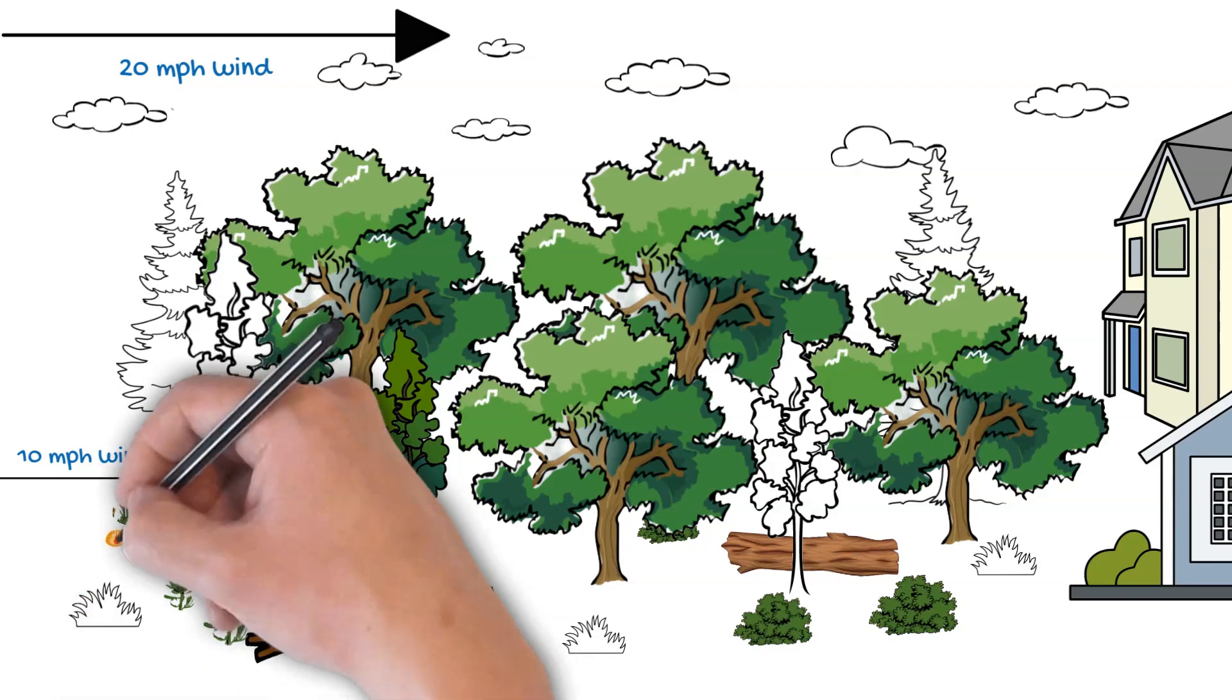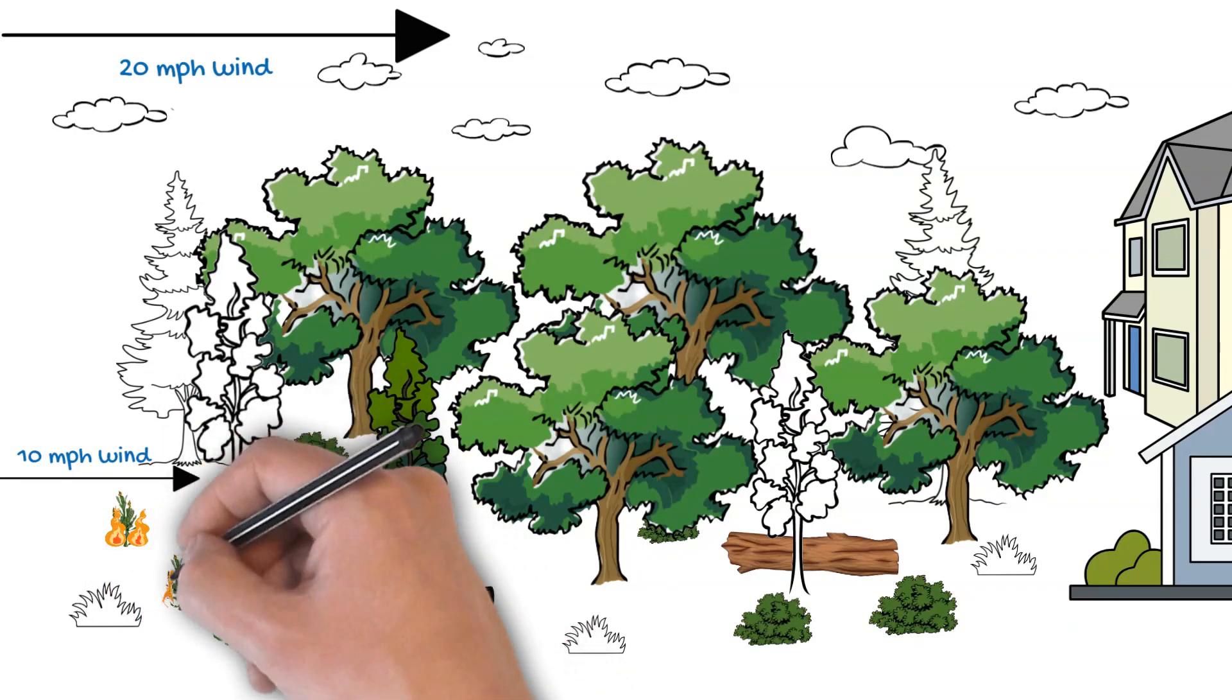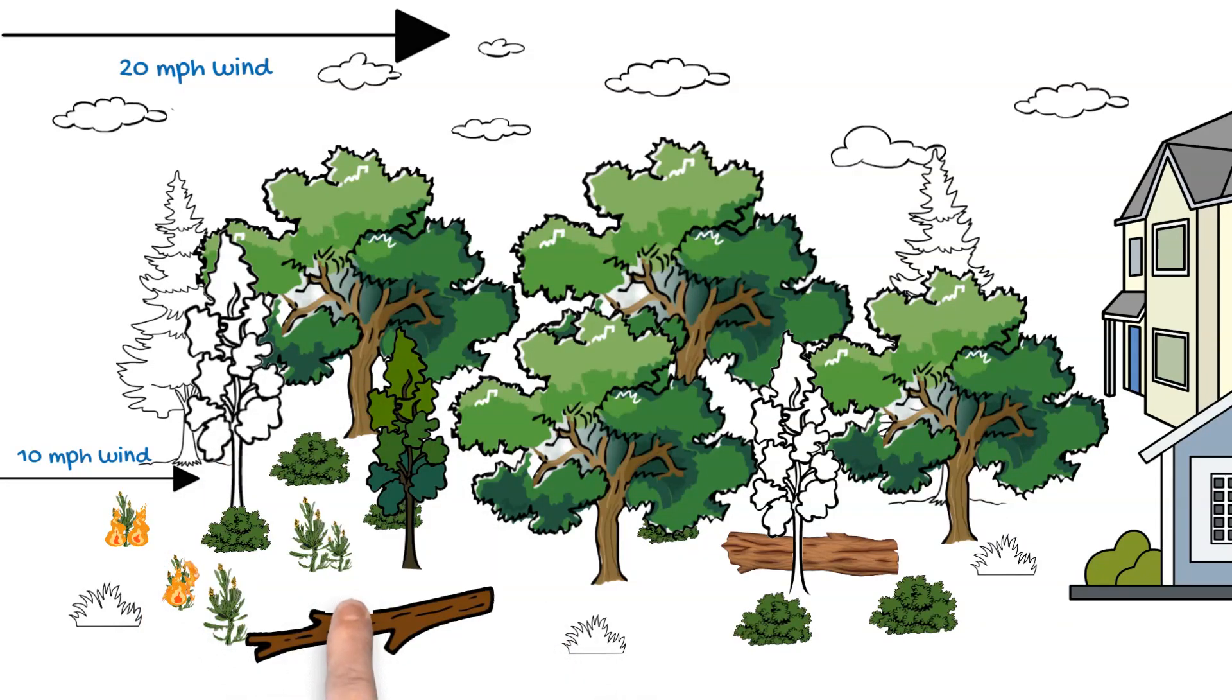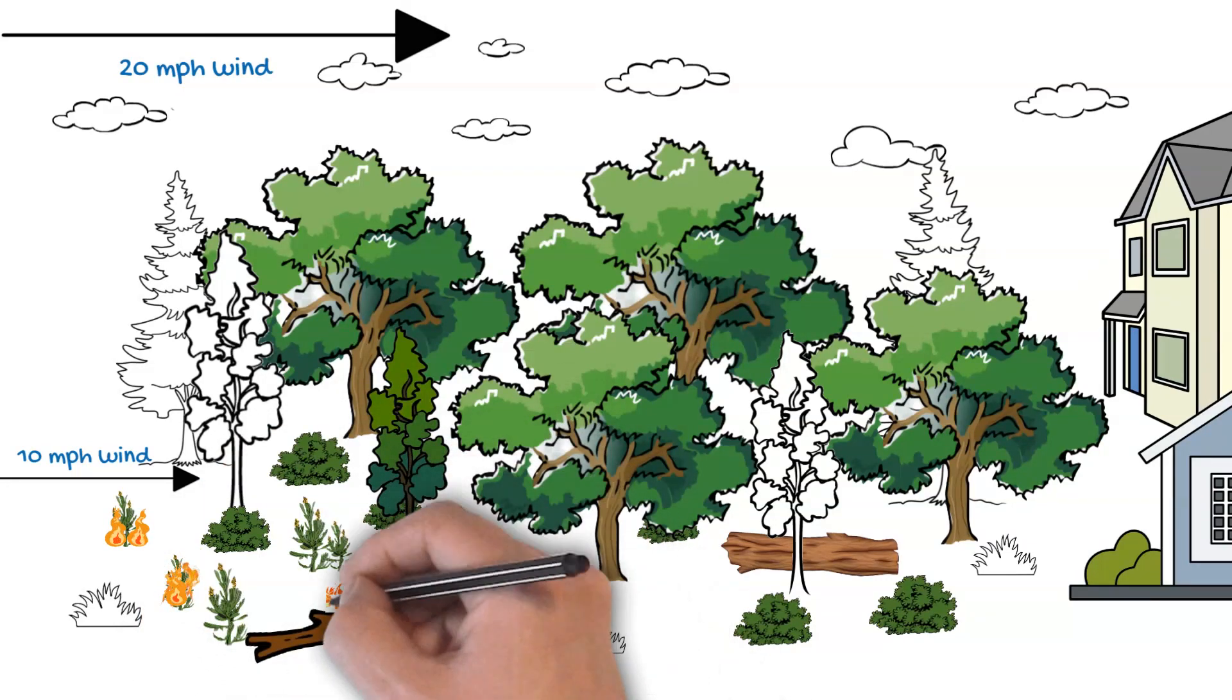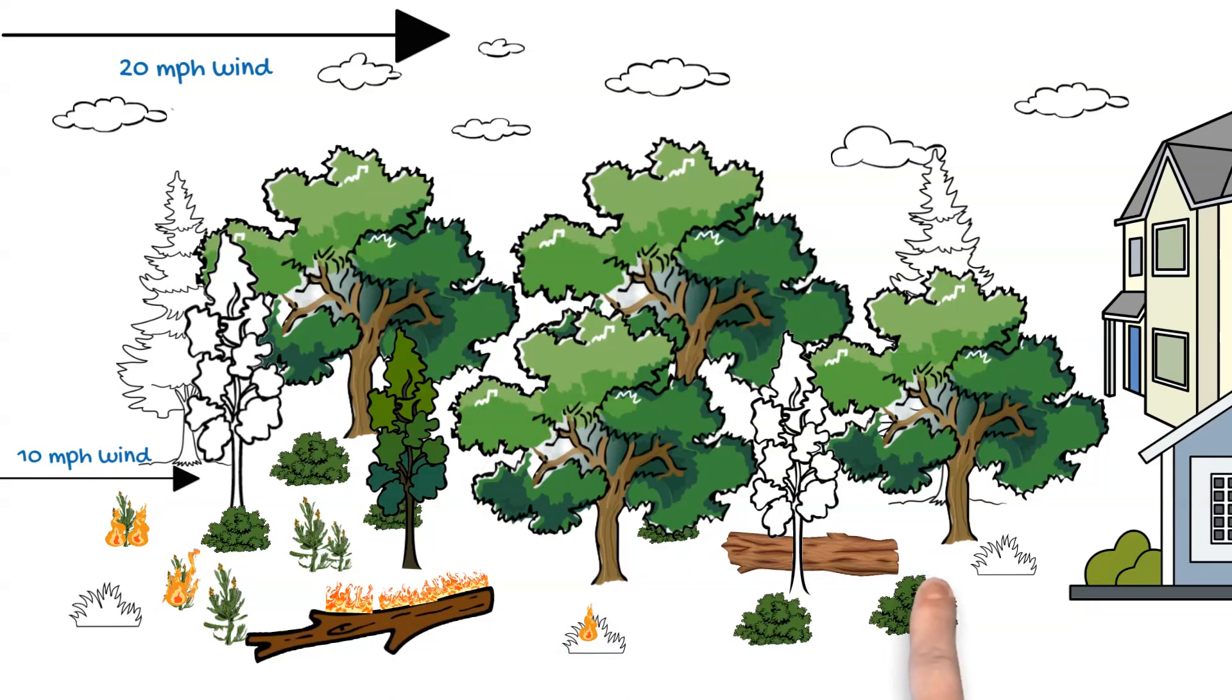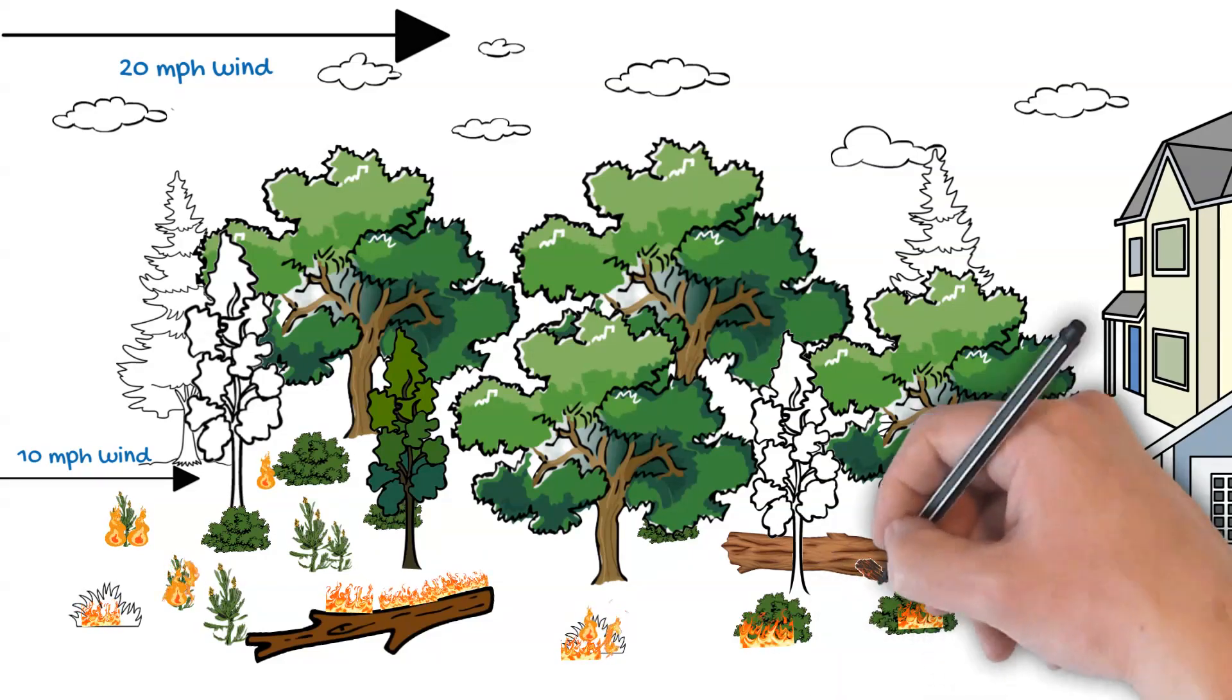Now, we're going to introduce some fire. We'll put it over on the lower left. And as you see, the fire stays low intensity because there's not as many ground fuels. There's not a lot of brush to burn, and the brush is separated, so you don't have the fire spreading from one brush plant to the next. You also don't have the fire climbing from the brush into the trees.